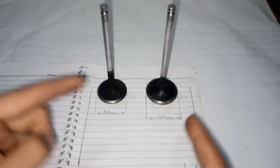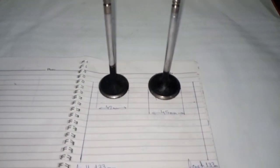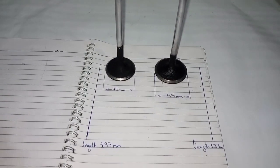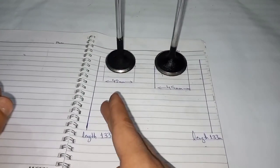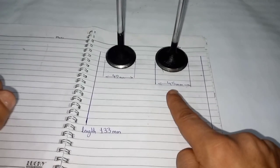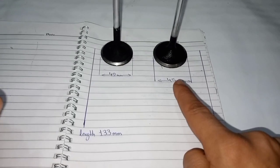Both of the valves have the same length which is 133 mm, but there is a difference between diameter. The exhaust valve is 42 mm diameter, but the intake valve is 45 mm diameter.